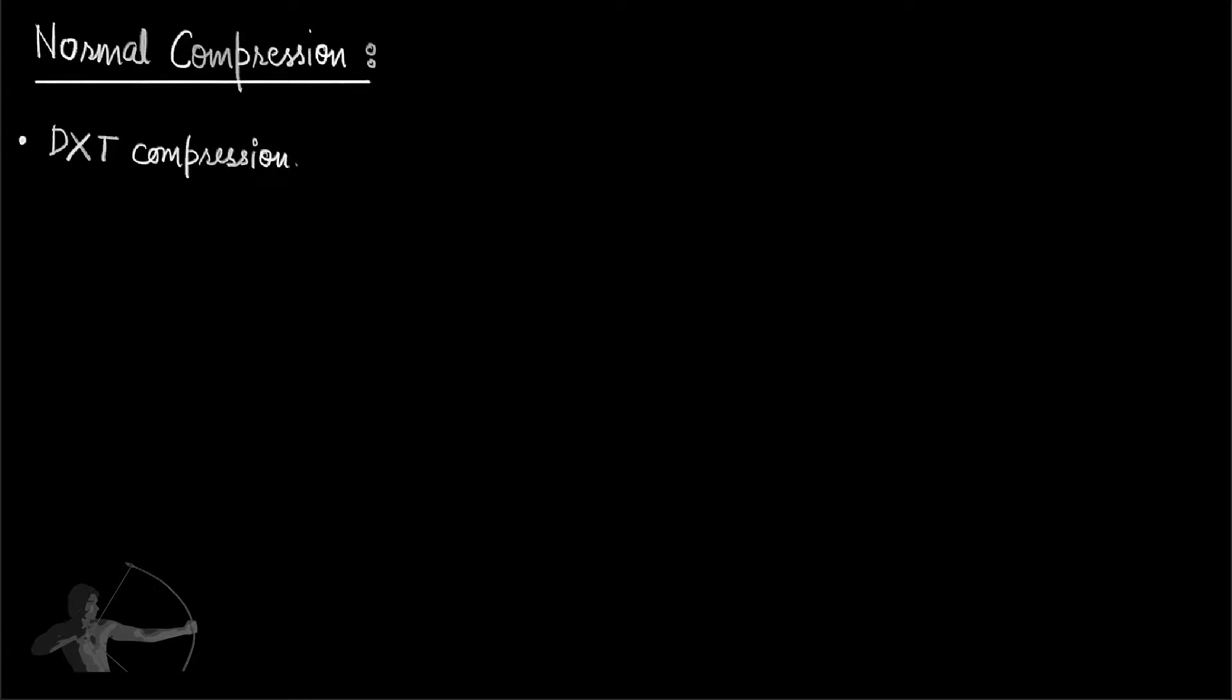How DXT compression works is that it divides the image into 4x4 blocks, and then for each block it finds two most important colors or two most important color channels.